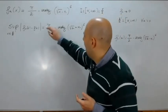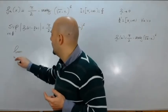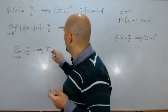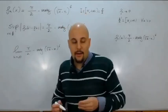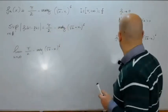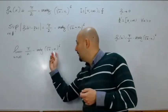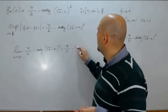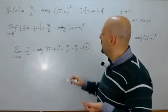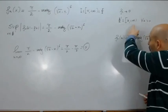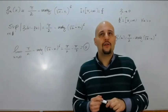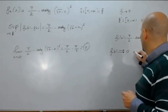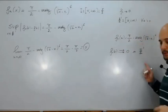Se facciamo il limite per n → ∞ di π/2 - arctan((√a - n)⁶): √a è costante, √a - n → -∞, alla sesta è +∞, arctan(+∞) = π/2, quindi otteniamo π/2 - π/2 = 0. Questa successione è infinitesima, come richiesto dal teorema. Quindi in Θ' = [a, +∞), per ogni a > 0, è verificata la convergenza uniforme: f_n(x) → 0 uniformemente su [a, +∞).